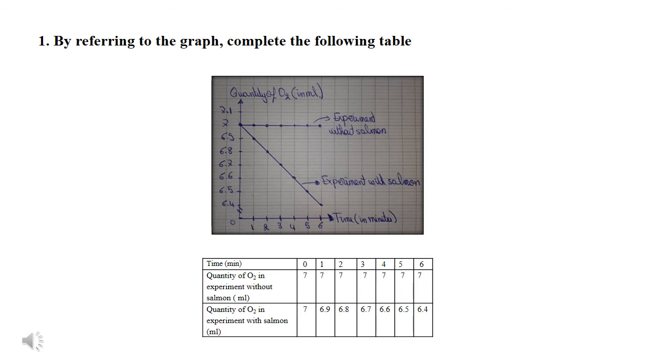Let's now see the curve that represents the quantity of oxygen in the experiment with salmon. At time zero, as you can see that the point is at seven. So, write seven. What happens as the time increases to one? We notice that the point is at six point nine. So, write six point nine and continue the table.